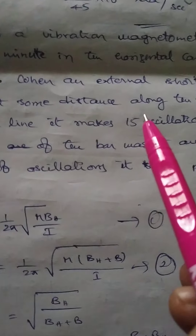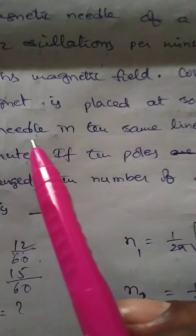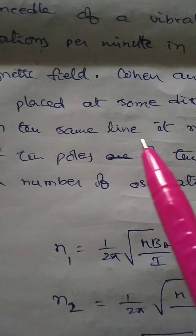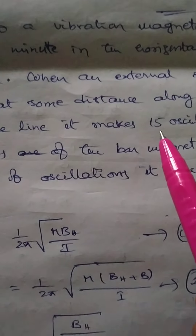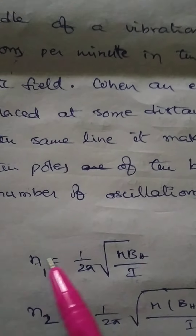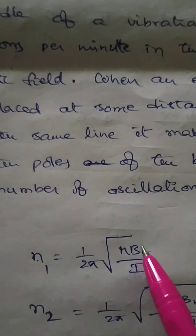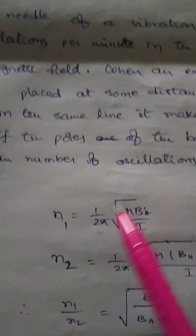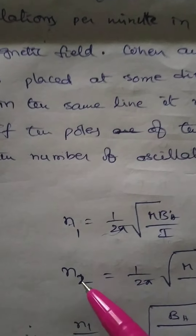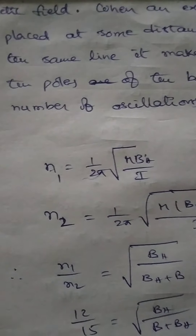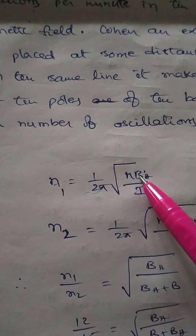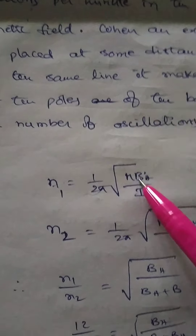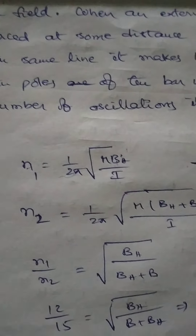The short bar magnet is placed at some distance along the axis of the needle in the same line, and it makes 15 oscillations per minute. Since n is directly proportional to B, in the first case n1 = 12, and in the second case n2 = 15. The increase in n means the field created by the external magnet also supports Earth's magnetic field.